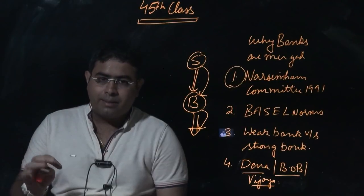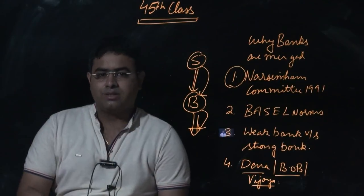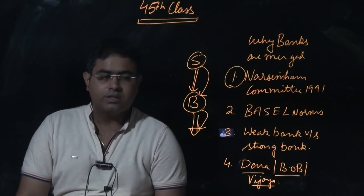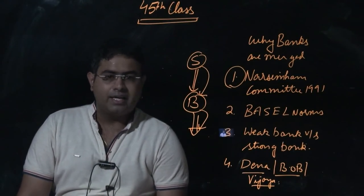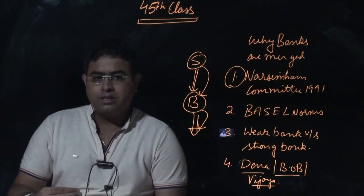We need three international level banks, eight national level banks, and rest should be regional banks. This was the recommendation of Narasimhan Committee in year 1991. Why did Narasimhan give this recommendation?